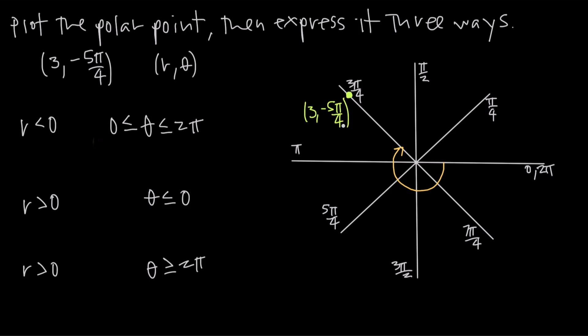Now that we've plotted the point, we need to express it a few different ways. What they want us to do is find the exact same point in coordinate space, just written differently.